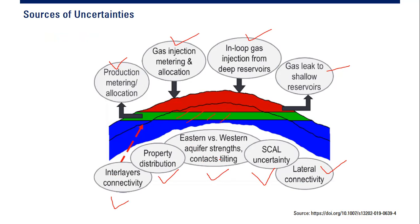There will also be uncertainty from interlayer connectivity, property distribution, lateral connectivity, and the eastern versus western aquifer strength, as well as contact tilting. We can never be 100% certain about how properties are distributed, how interlayer and lateral connectivity behave, how strong the aquifer is, or whether the contact is tilted or horizontal. There will always be uncertainty — from metering errors, gas leaking, property distribution, interlayer connectivity, and lateral connectivity.